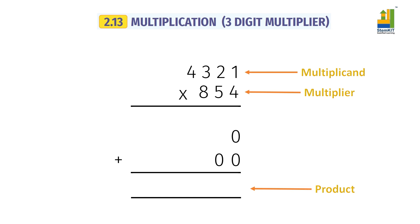First understand that the multiplier 854 is actually 800 plus 50 plus 4. We first multiply with 4, then with 50, then with 800. So, the steps are...